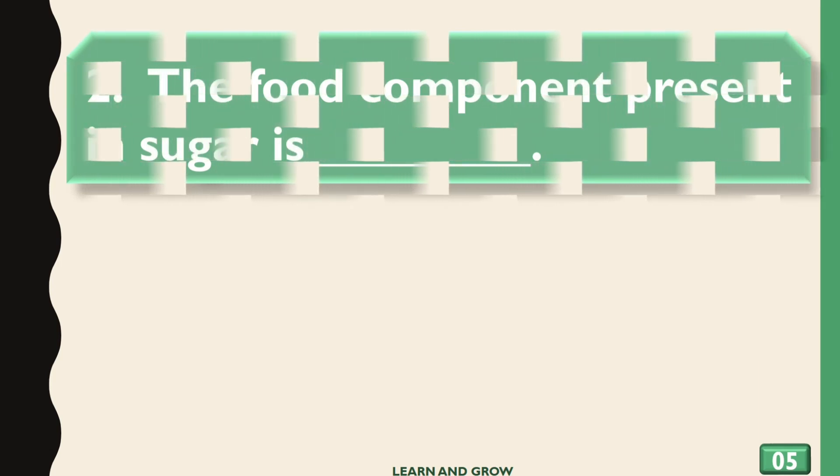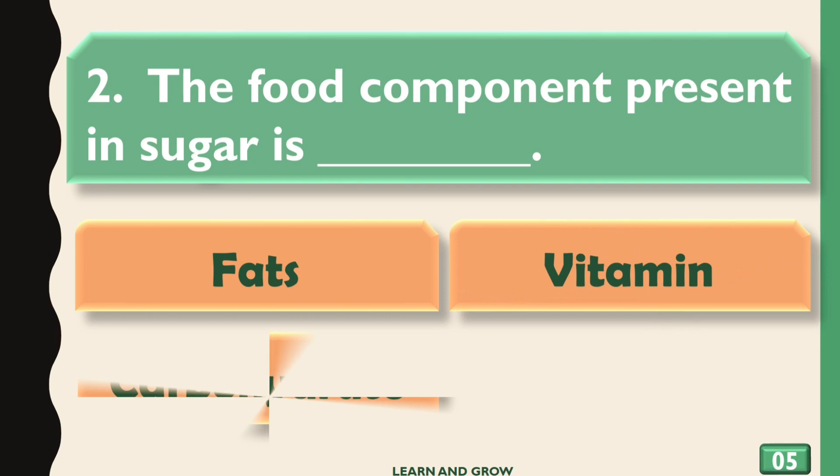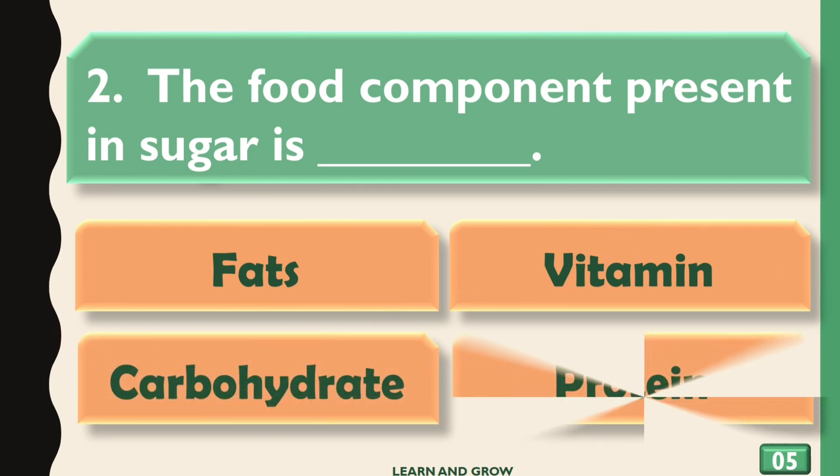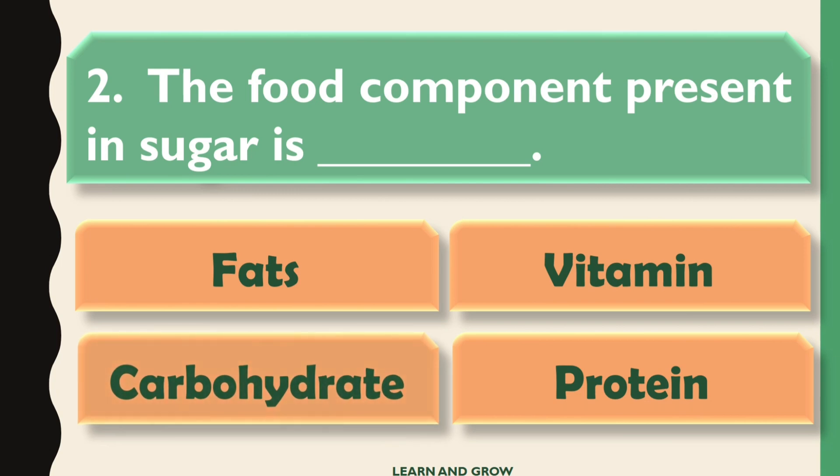The food component present in sugar is: options are A) Fats, B) Vitamin, C) Carbohydrate, or D) Protein. The right answer is Carbohydrate.